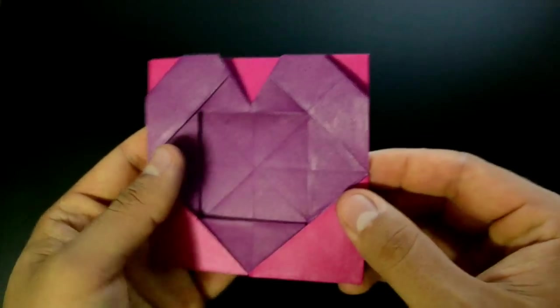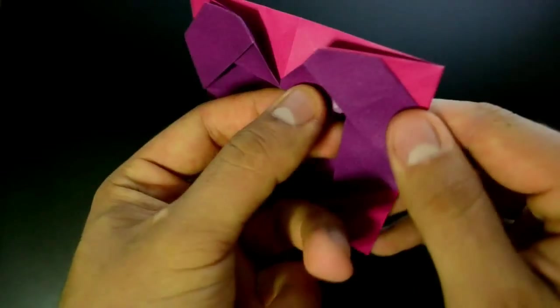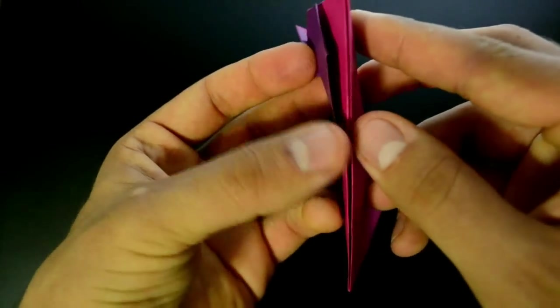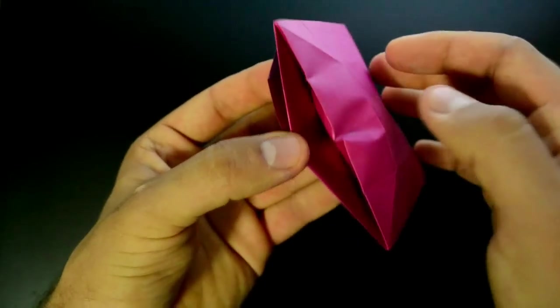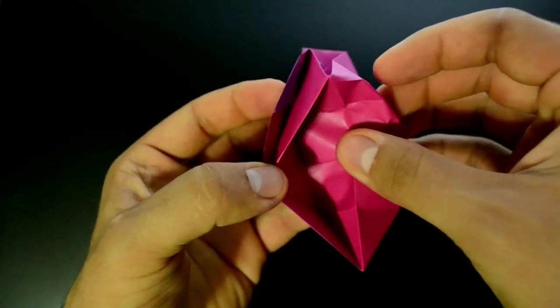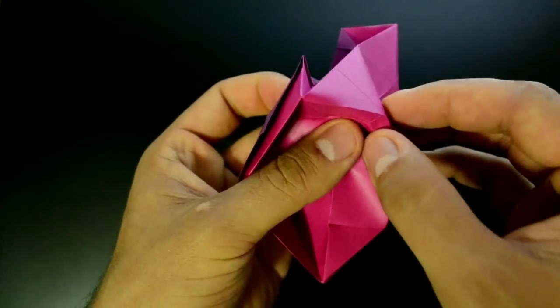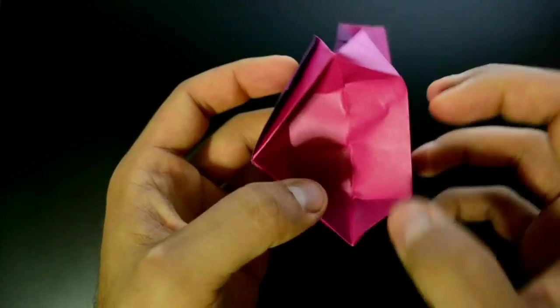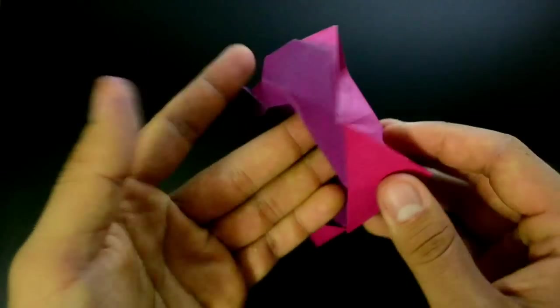Now we need to open the paper. Just watch what I do and repeat. With the fingers inside, open here and flatten the paper until the square on the middle. Something like this.